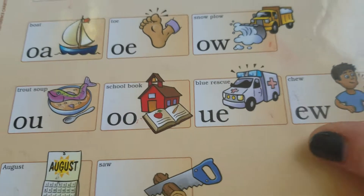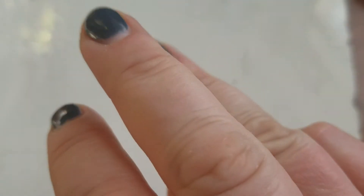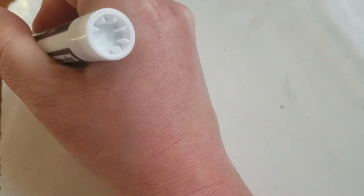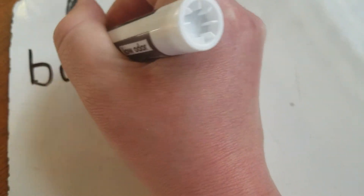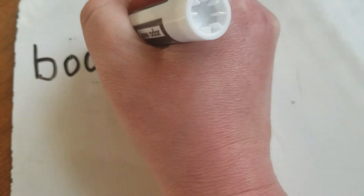Alright, let's build a word chain. Let's start off with our OO word: book. Let's tap out book — buh, uh, kuh — book. Now let's spell out book — buh, uh, kuh — book.